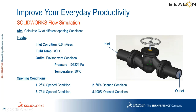In the first case study, I have a globe valve where one side is the inlet and the other is the outlet. My aim is to calculate the Cv at different opening conditions. Using SOLIDWORKS CAD configurations, I can make the handle go up and down to compute Cv at different openings. The inlet condition is a flow rate of 0.6 cubic meters per second at 80 degrees Celsius. The outlet is at environmental conditions at 30 degrees Celsius.